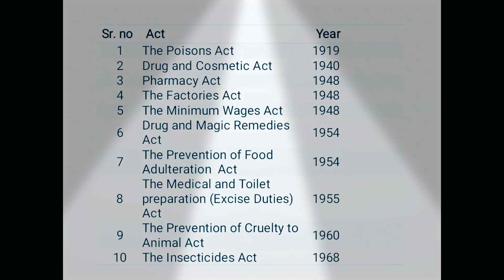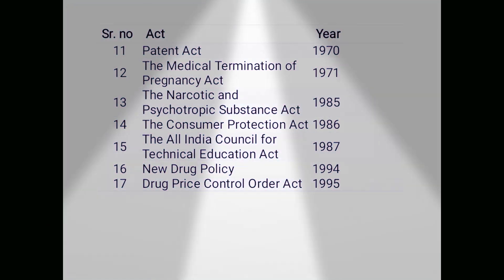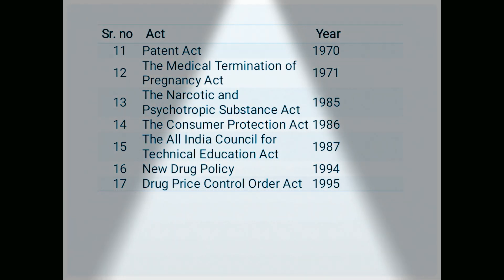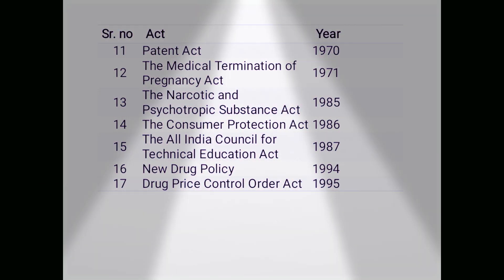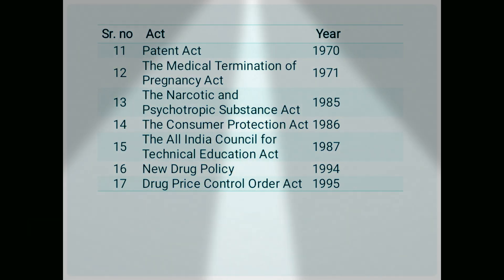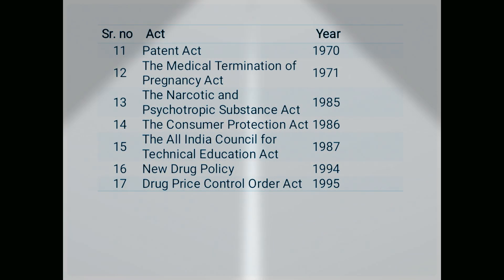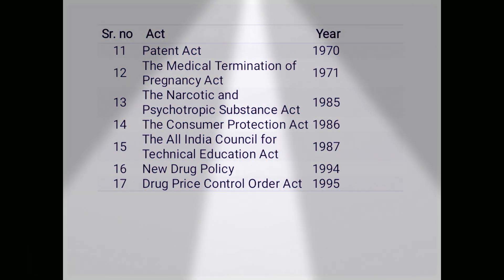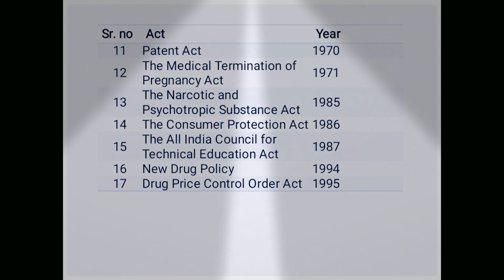The Prevention of Cruelty to Animals Act from 1960. The Insecticides Act from 1968. The Patent Act from 1970. The Medical Termination of Pregnancy Act from 1971. The Narcotic and Psychotropic Substance Act from 1985. The Consumer Protection Act was enacted from 1986.